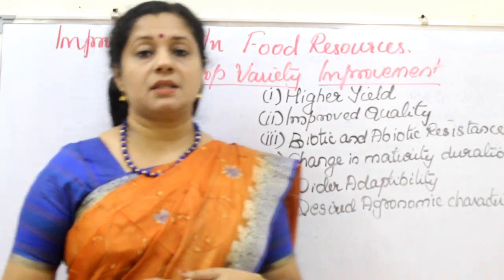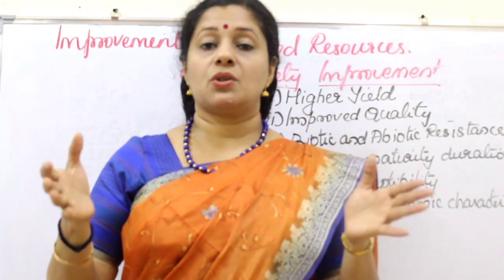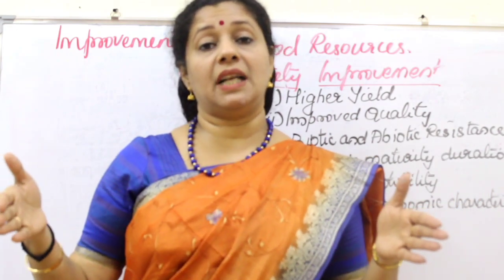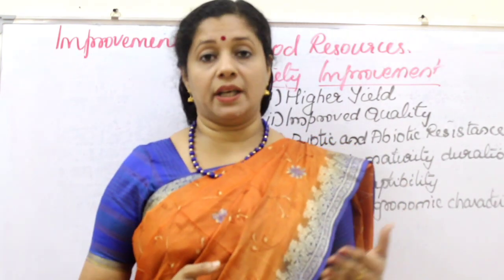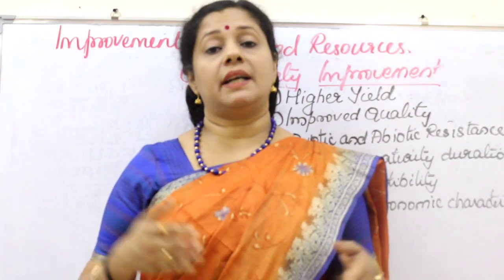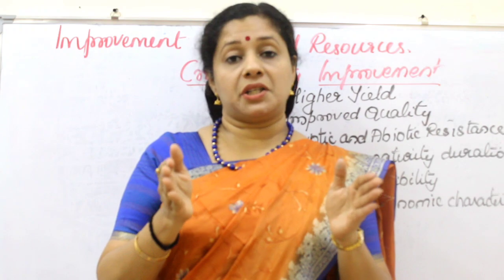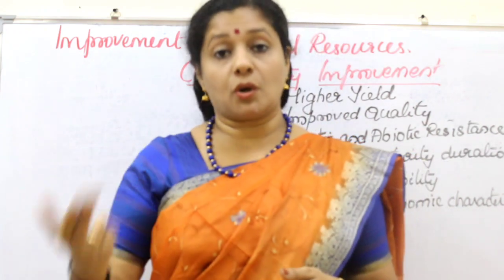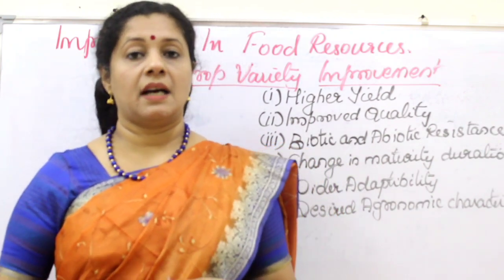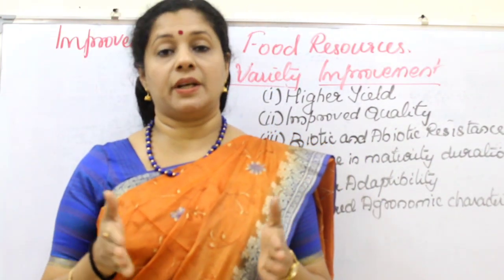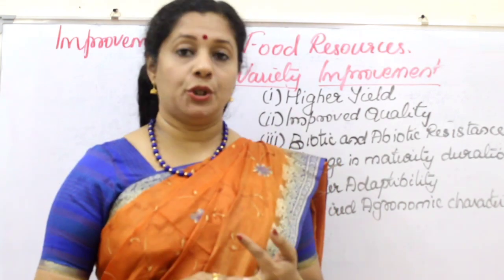Next is change in maturity duration. Maturity duration means the time from sowing until harvest. If the maturity period is long, the farmer has to wait a long time to get the harvest — for example, rice naturally takes 6 months. If we reduce the duration to 3 months, we can have 2 crops within the same season. This is an advantage for farmers as cost of production also becomes less. Advantages of a short maturity duration are: multiple crops in a year, low cost production, and uniform maturity of the crop.